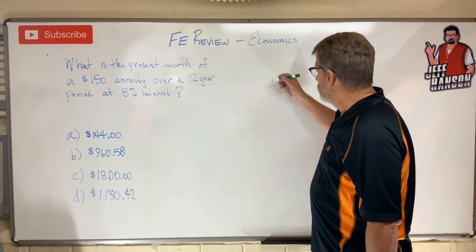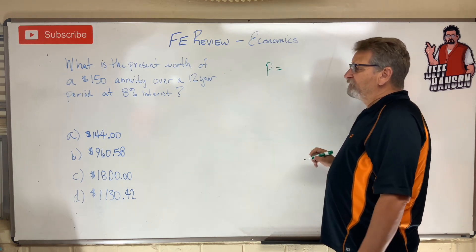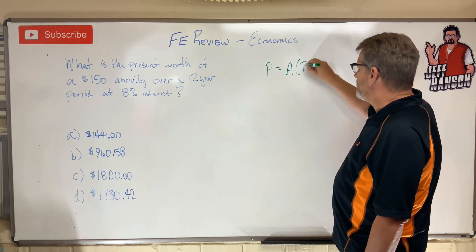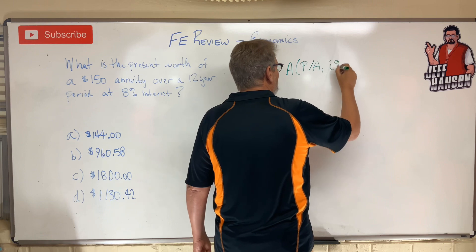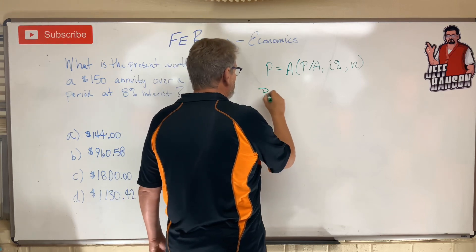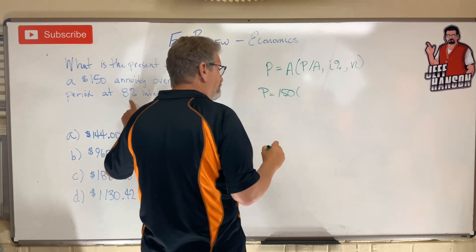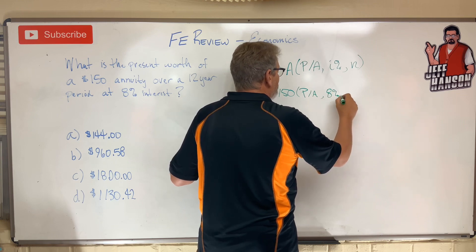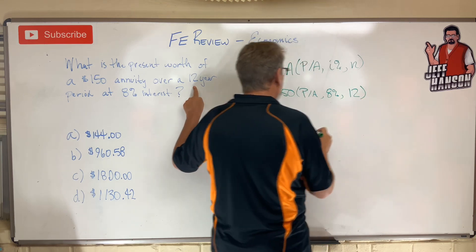This particular one — what is the present worth? So we're looking for present worth; that smells like P. Of a $150 annuity, so we're given an annuity. Remember how to read this: P given A, at I percent interest, for N periods. This particular one: P is going to equal $150 times the factor for 8% interest, P given A, 8% for 12 years.